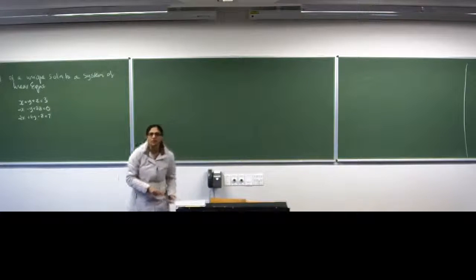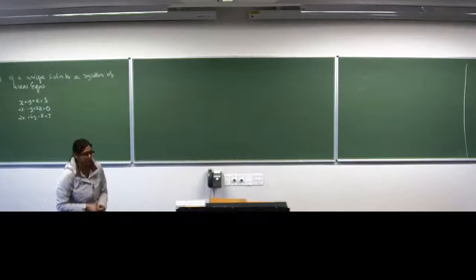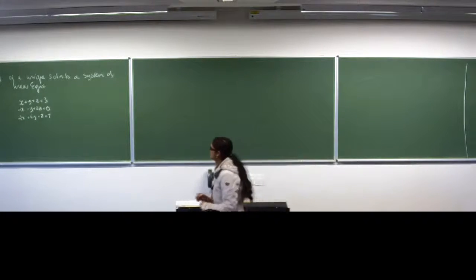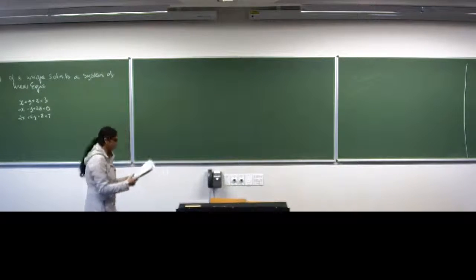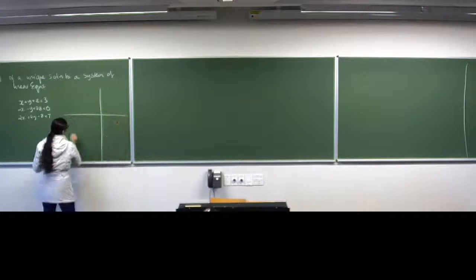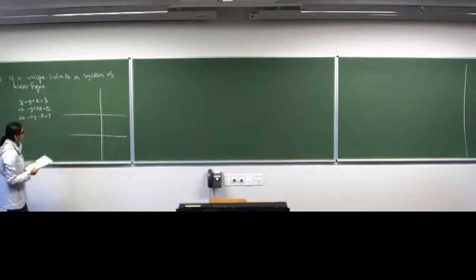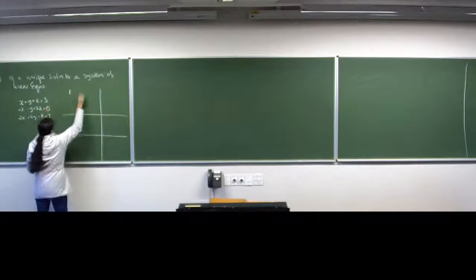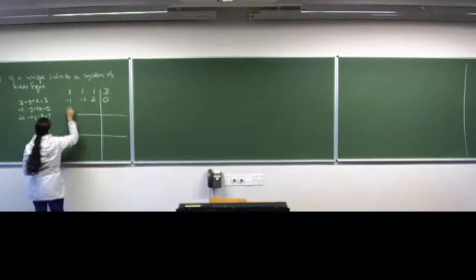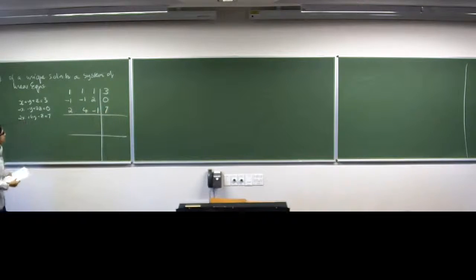One minus one two, one minus one four one two, and minus one, three zero seven. Can you solve this system of linear equations using Gauss reduction? So you can if you want to try it yourself. You know the method. I'm going to do it on the board slowly. No talking please. And you can see what I've done. I put in my coefficients, or my entries: one, one, one, three; minus one, minus one, two, and zero; two, four, minus one, and seven. It's my coefficients.